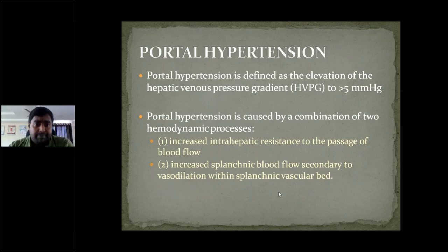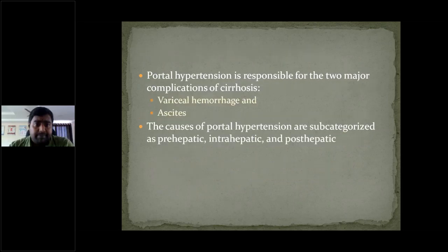This vasodilation is due to liberation of nitric oxide synthase, leading to vasodilation in the splanchnic vascular bed. This portal hypertension is responsible for two major complications of cirrhosis — one is variceal hemorrhage.